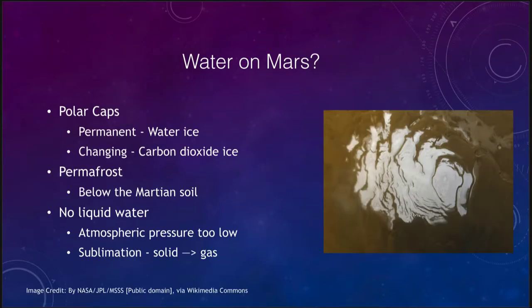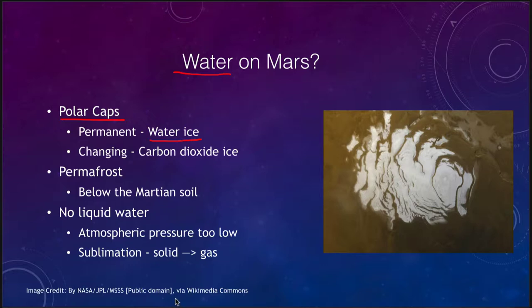What do we know about water on Mars? Water on Mars does exist today, but when we say water that does not necessarily mean liquid water. We know that there is water in the polar caps, and in fact the permanent polar cap is made of water ice. When we watch the polar caps on Mars they will grow and shrink with the seasons, but that is not the water ice that is changing. The water ice remains frozen at the temperatures and pressures on Mars. The carbon dioxide ice, or what we call on Earth dry ice, can change, causing the polar caps to grow and shrink.